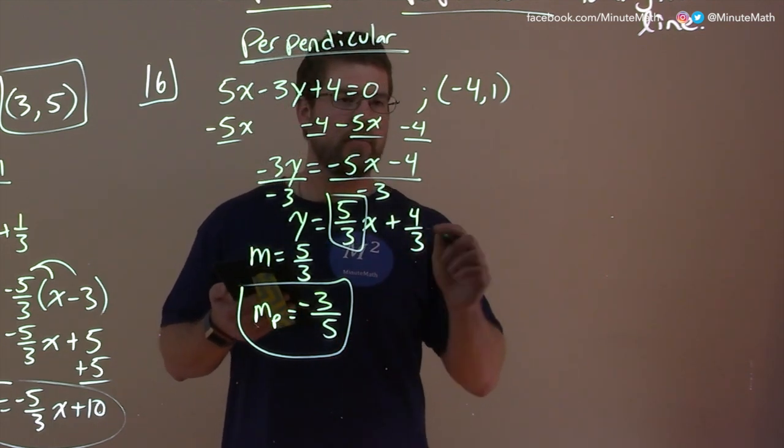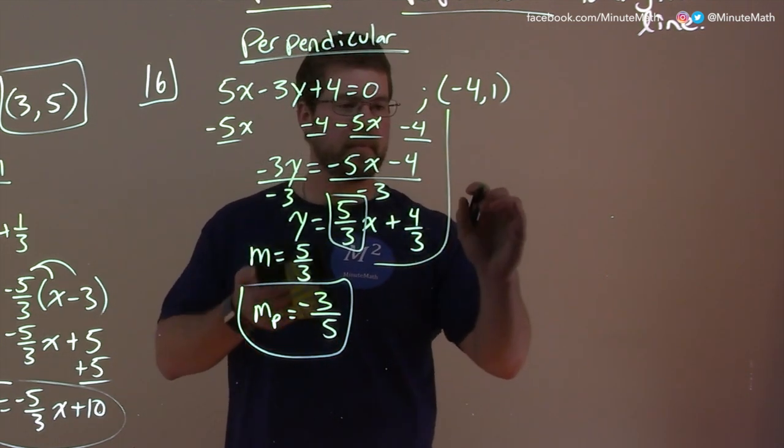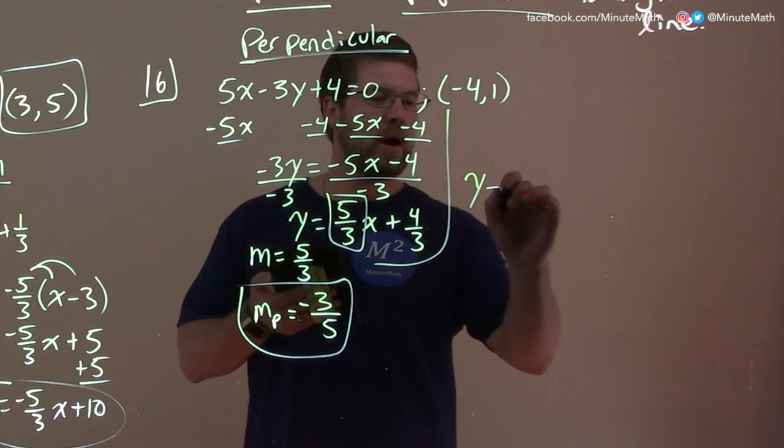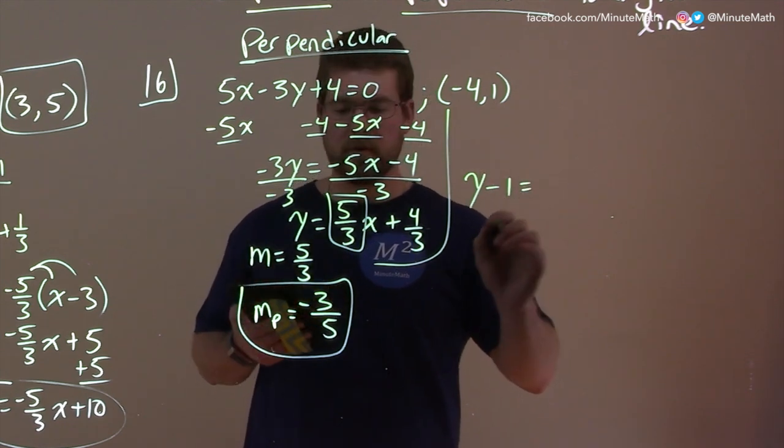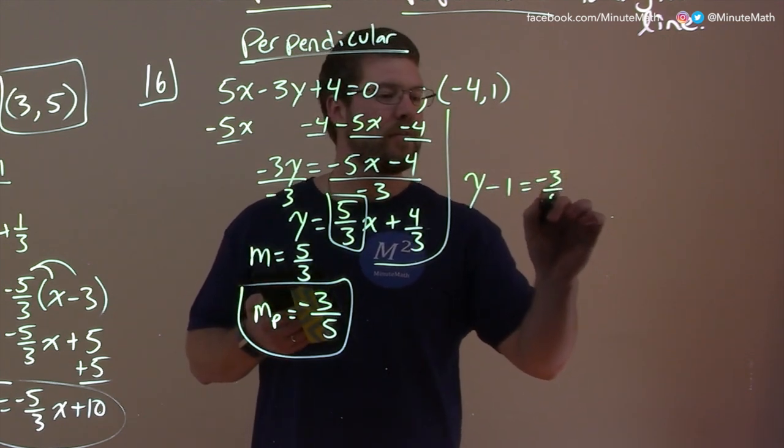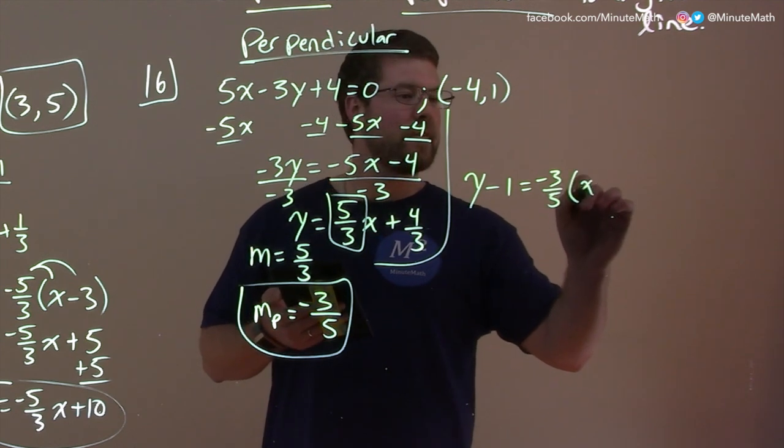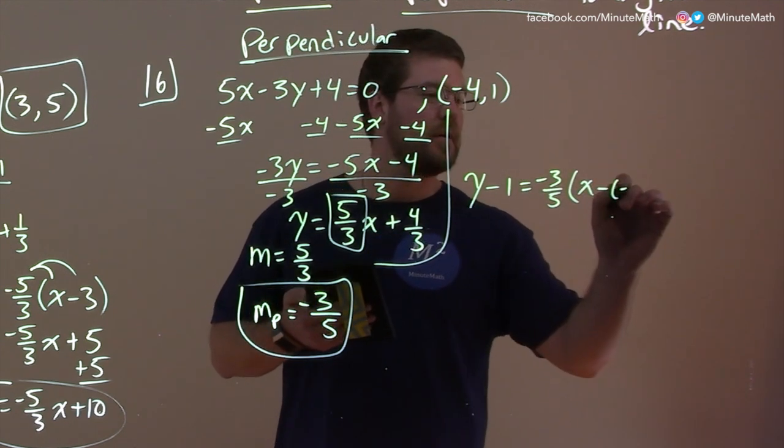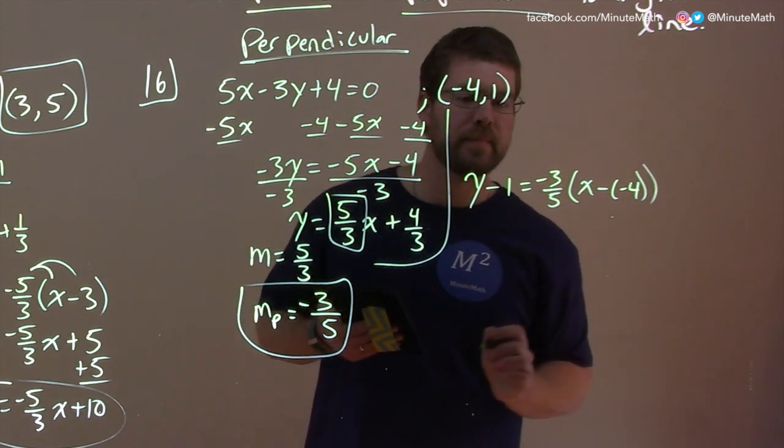So again, let's use our point slope form. So y minus y1, which is 1, equals our slope, negative 3 fifths times x minus x1, negative 4.